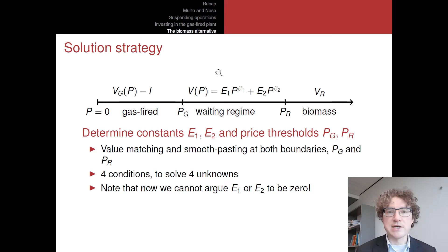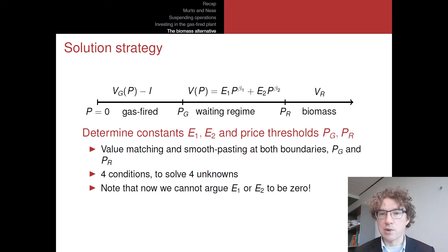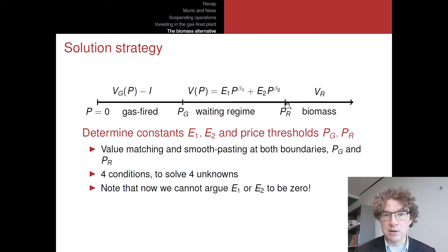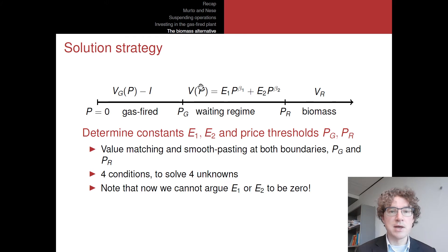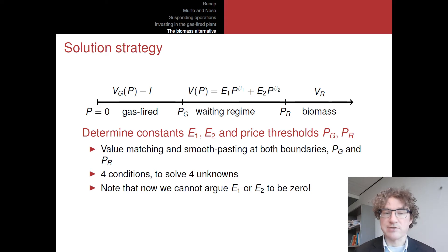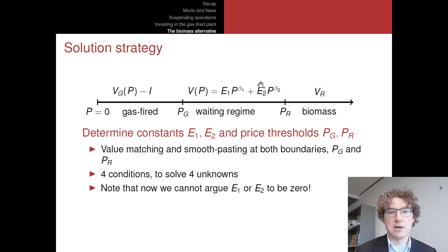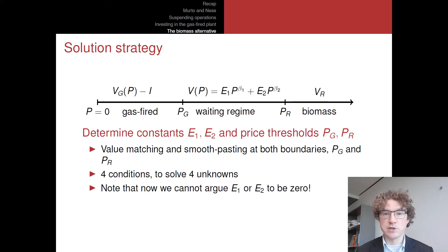Now in between there's going to be some regime in which we still have to figure out what we want. We want to wait here, but will we in the future want to make the biomass investment — which will happen if this price of gas keeps growing up to some threshold which we call PR — or on the other hand if P drops sufficiently far and gets closer and closer to zero, at some point, which we call PG, it will be optimal to make the investment in the gas-fired plant. But if we are somewhere in between these two thresholds, we have to wait. So here we have an option to wait essentially.